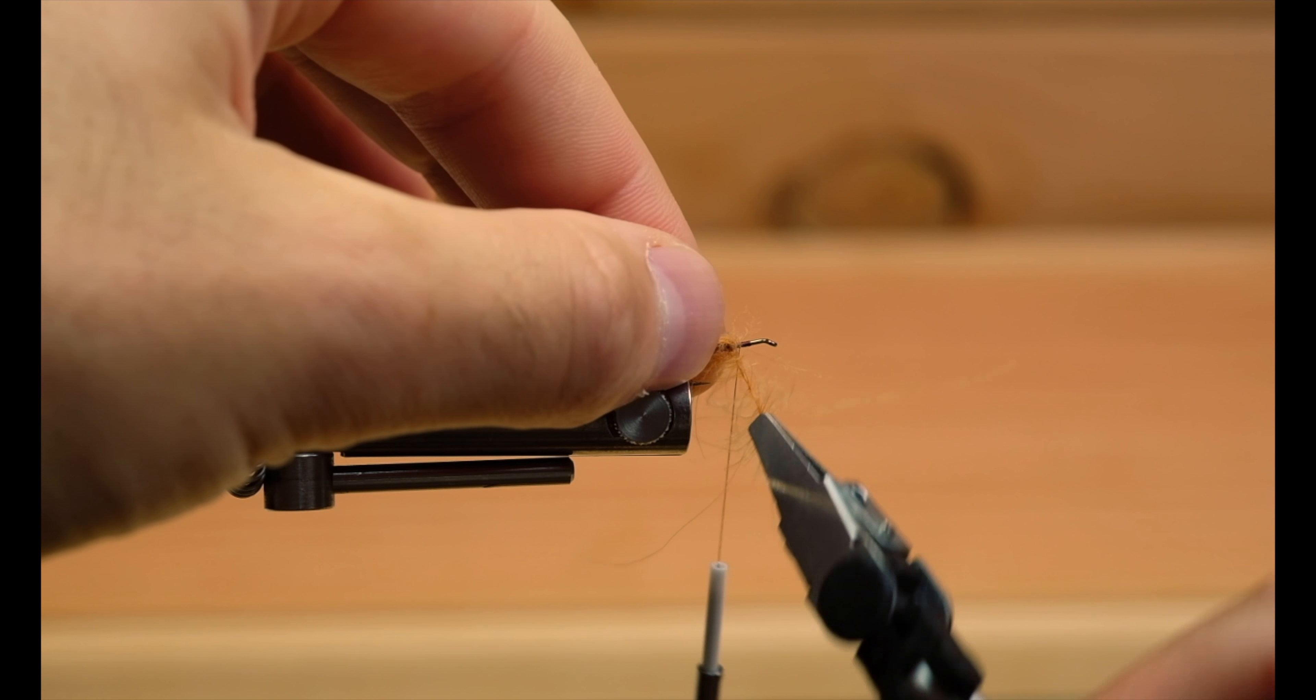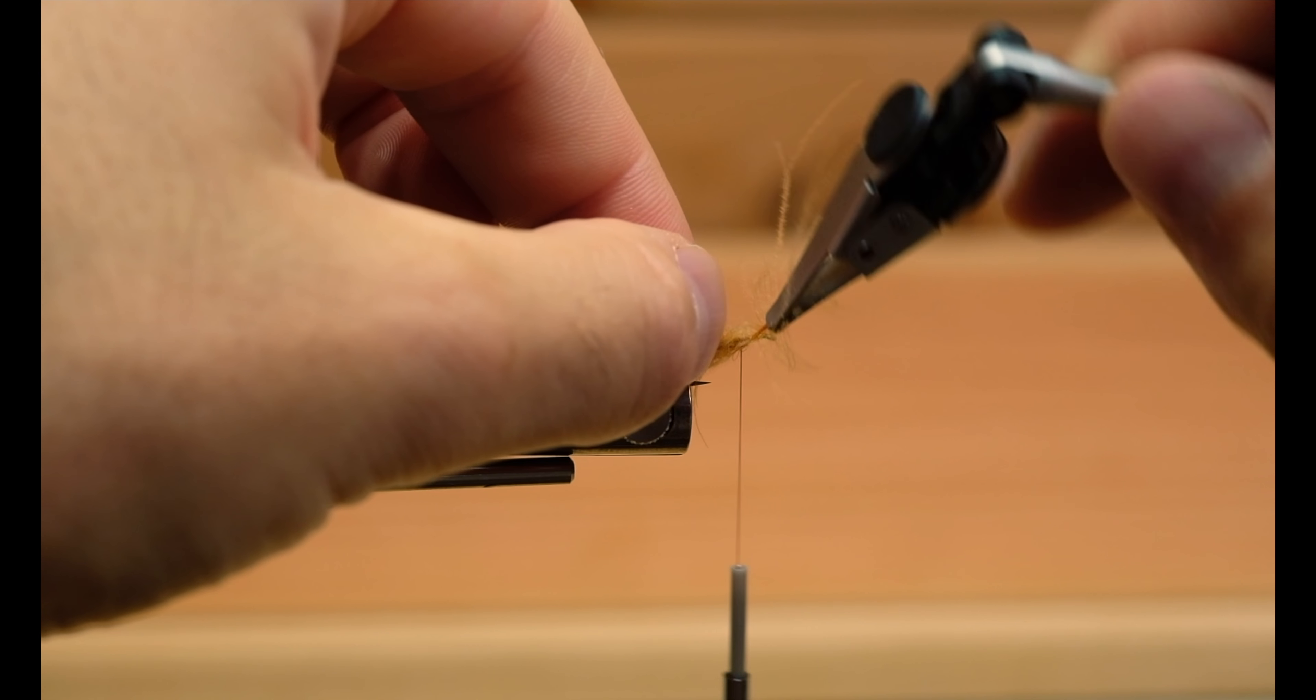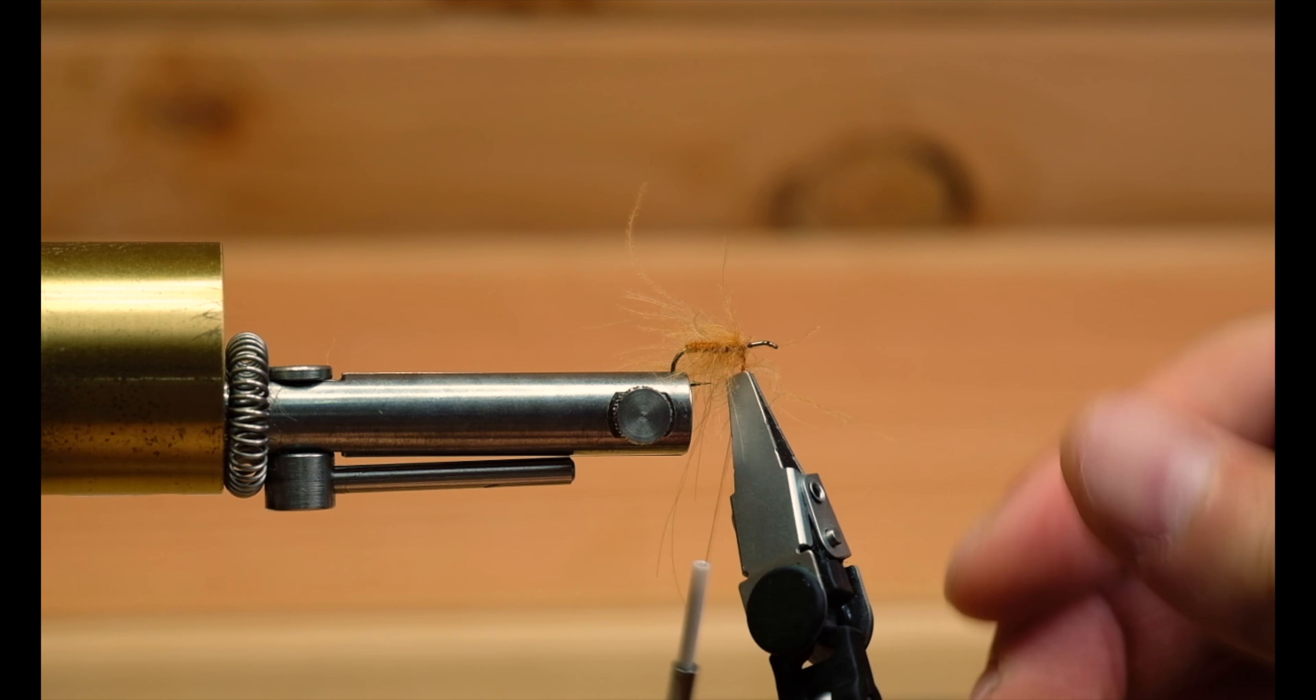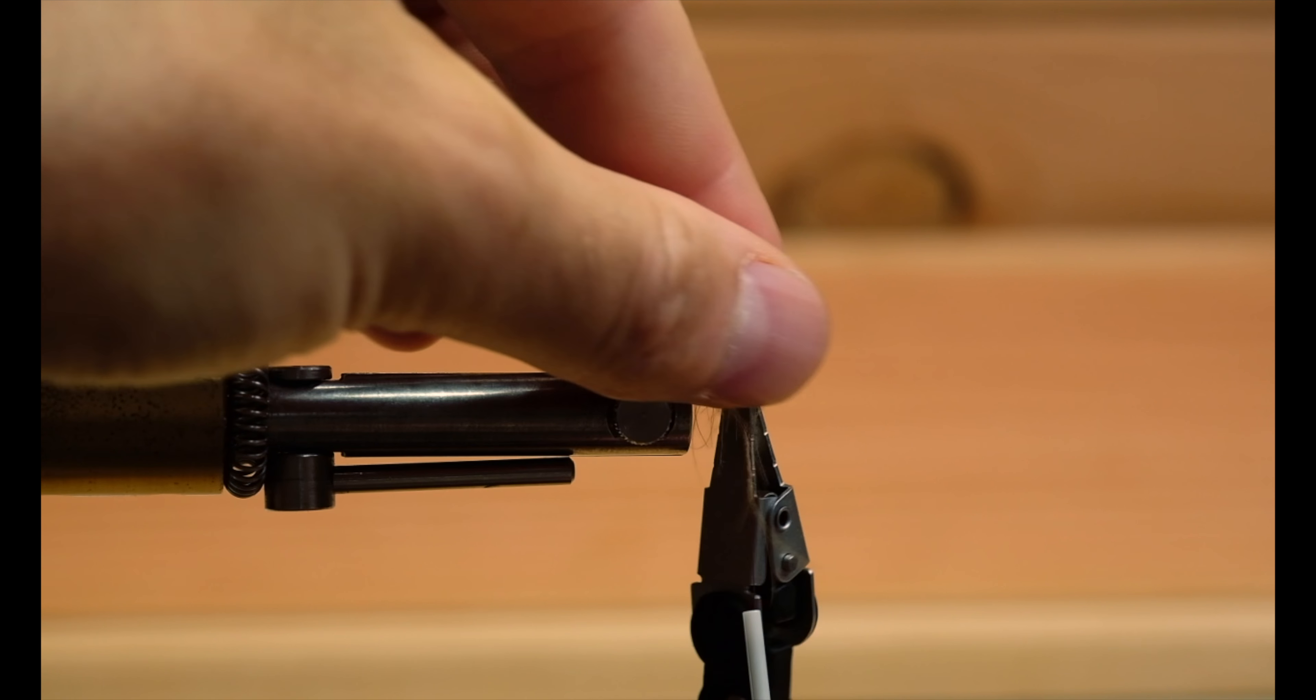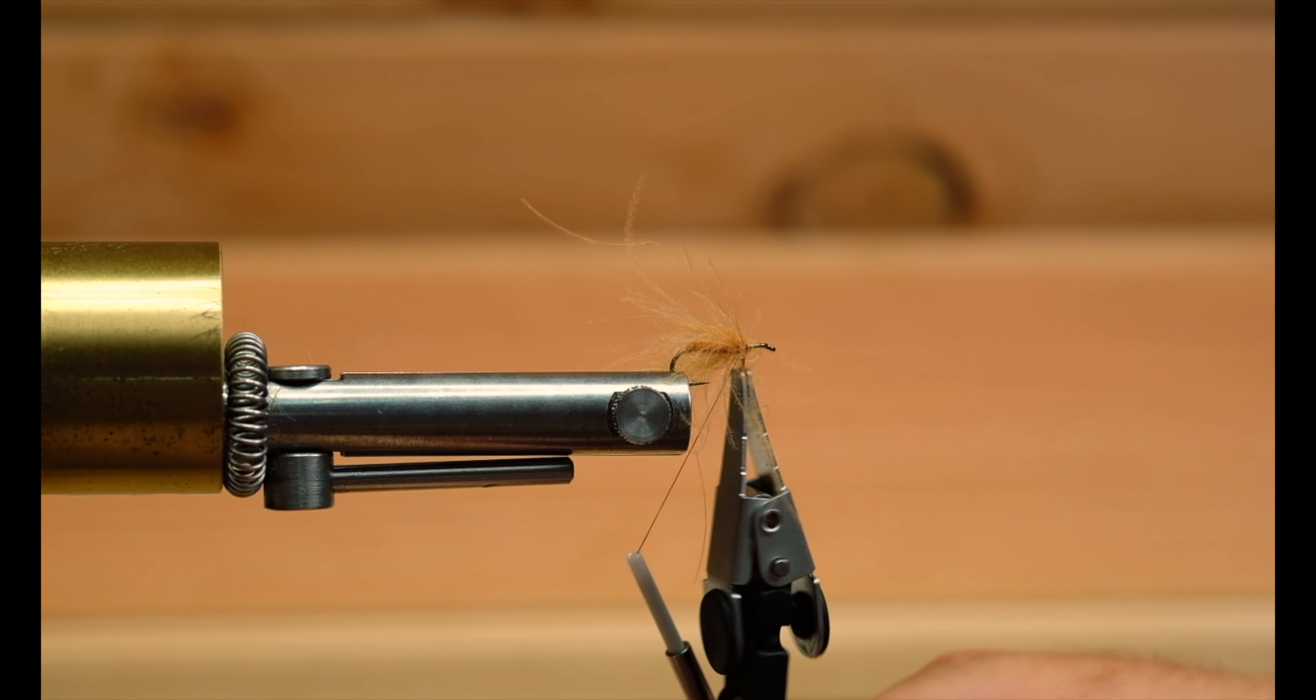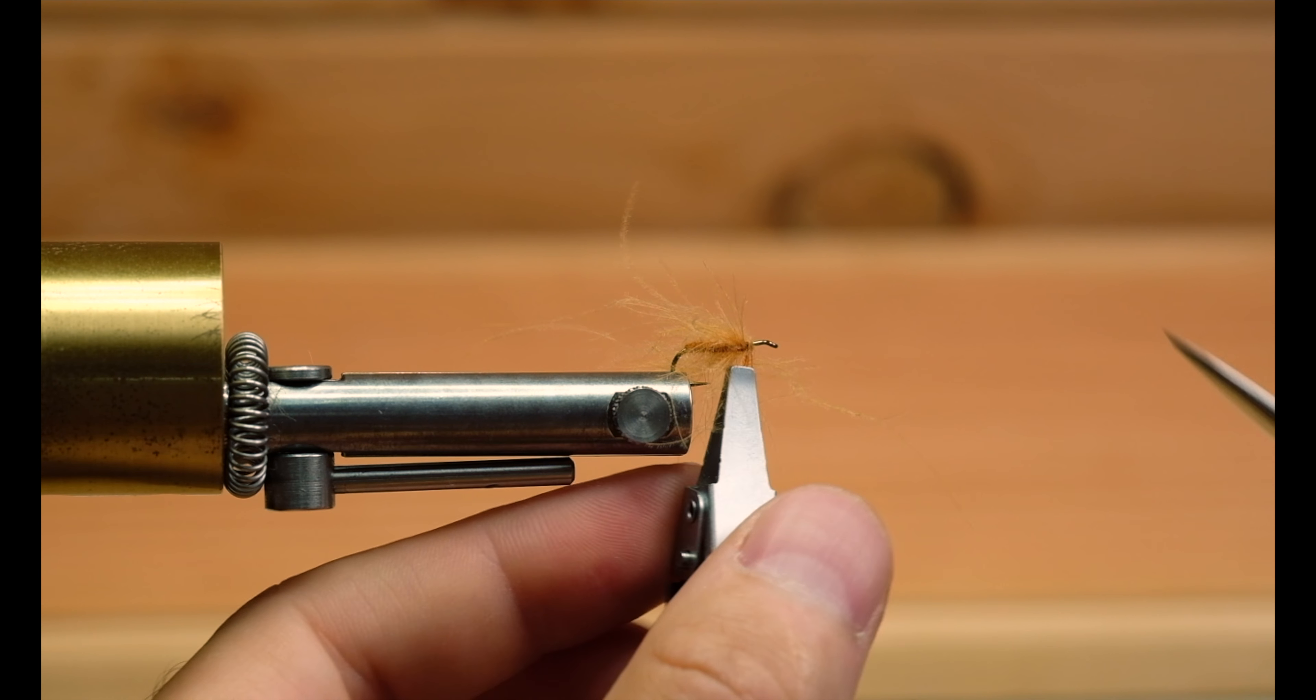Just advancing to the front. Tie this off with two or three wraps. Pull it back, just one wrap in front of that to secure it.